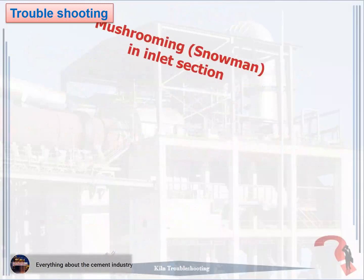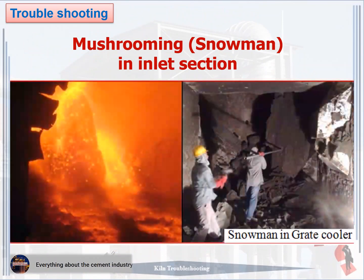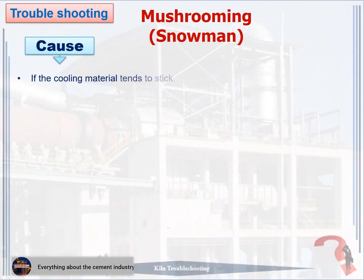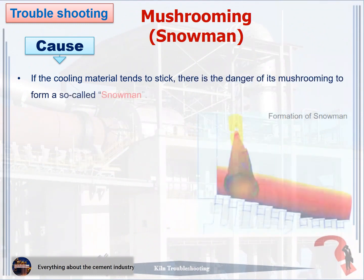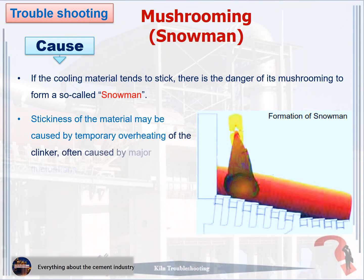Problem 3: Mushrooming / snowman in the inlet section. The cause of snowman formation: one, if the cooling material tends to stick, there is the danger of its mushrooming to form a so-called snowman. Two, stickiness of the material may be caused by temporary overheating of the clinker, often caused by major fluctuations in the chemical analysis of the raw meal.